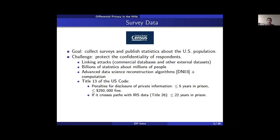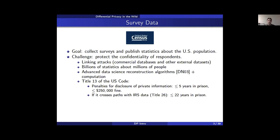First, it's become so easy to collect observational data about millions of people, and there are many datasets available for free or from commercial sources. A concern is that someone may be able to link these datasets to census data to obtain additional information about target individuals. Linking attacks can be successful even if the census only publishes data in aggregated form.